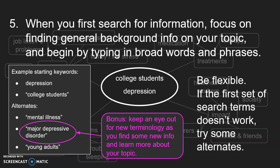Number five: when you first search for information on a research topic, you want to focus on getting general background information, which will really help you do the rest of the research. If you skip that step, sometimes you end up in a corner and don't find what you need. So when looking for general background information, start by typing in broad words and phrases. Since my topic is college students who suffer depression, I'm going to use the word 'depression' and the phrase 'college students' in my first searches. But you need to be flexible — if the first set of search terms doesn't work, try some alternates, such as 'mental illness,' 'major depressive disorder,' or 'young adults.'